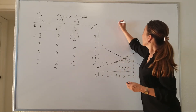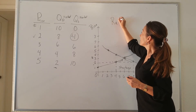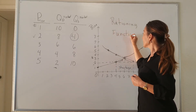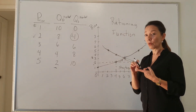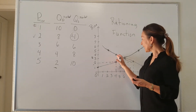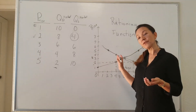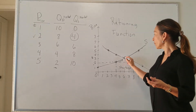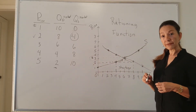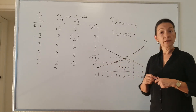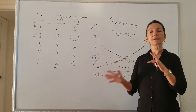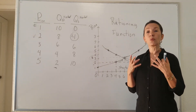We say this is the rationing function of price, and it helps answer some of the basic questions: what do we produce, how do we produce it, and for whom? In this case, we're producing ice cream in the most efficient manner possible. Who gets it? Those who are willing and able to pay $3 for the ice cream cone. If you don't have $3, you don't get the ice cream. That's how the market system works — the market decides who gets what and what gets produced.